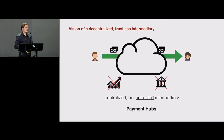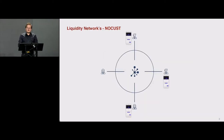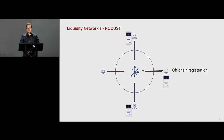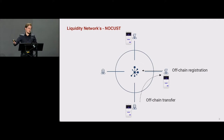What I would like to explore today is the concept of a centralized but untrusted intermediary. Sometimes it might be OK to work with a centralized intermediary which is non-custodial because it's not trusted — it doesn't hold your funds. Today we're going to talk about payment hubs. The architecture I'd like to discuss is Liquidity's NOCUST, a particular payment hub where four different users can do an off-chain registration and join without having any crypto. A member that already has some off-chain crypto can send it to this new member.